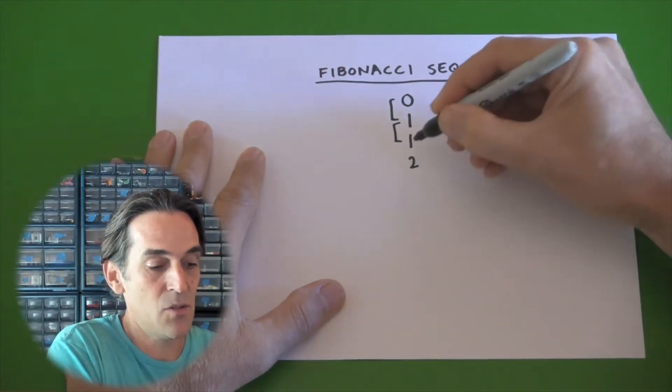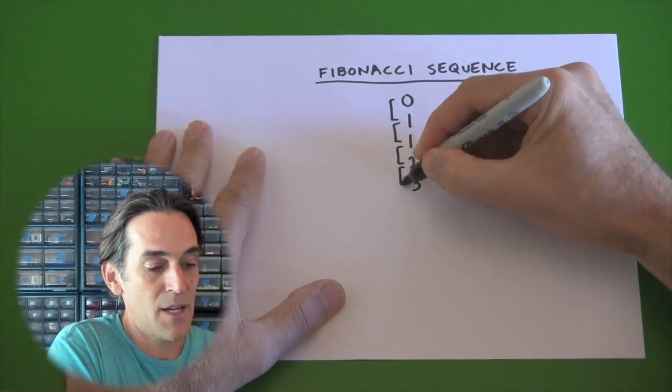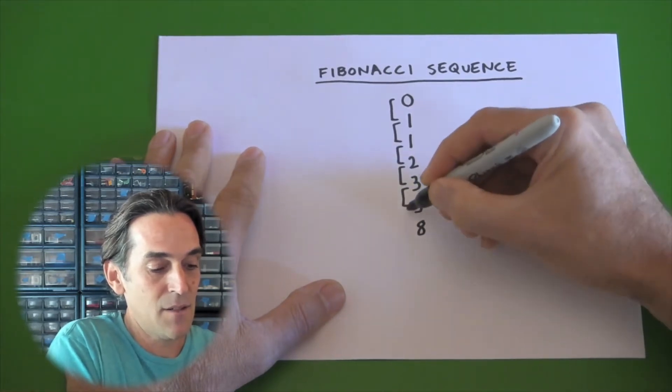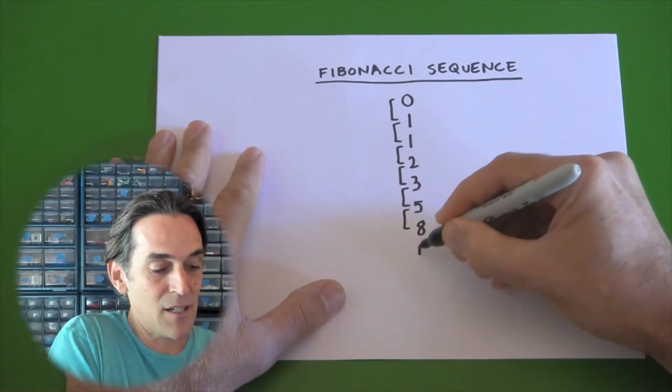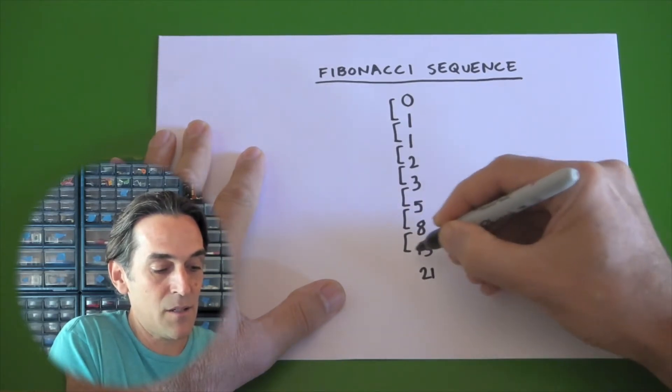1 plus 1 is 2. 2 plus 1 is 3. Now it jumps to 5. 5 plus 3 is 8. And you can get the idea of how this is created. It can go on and on and on.